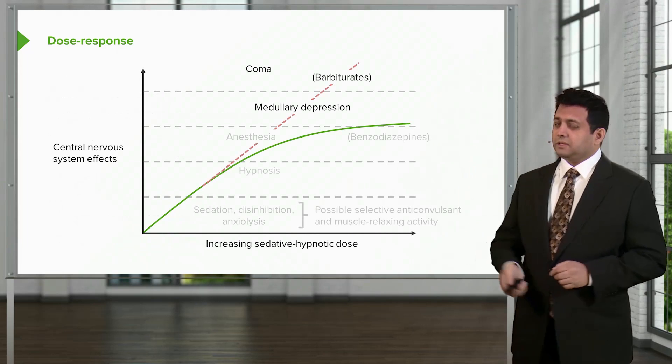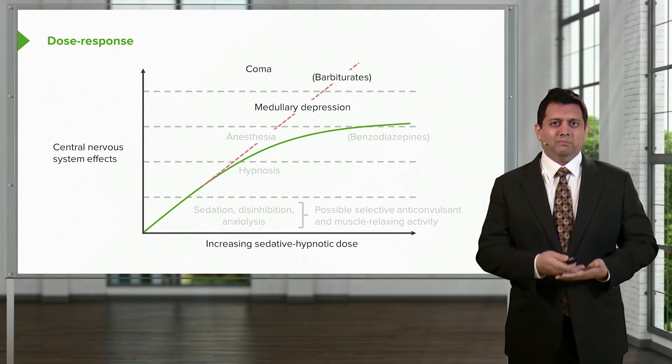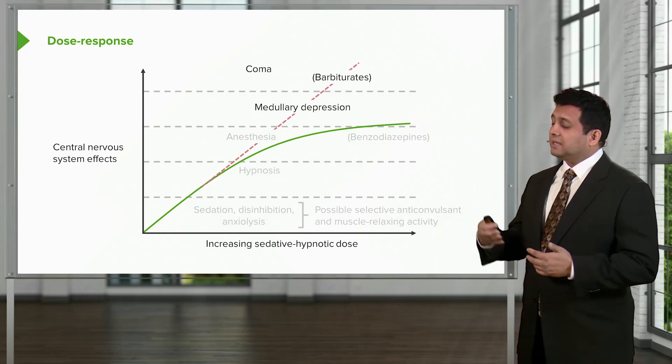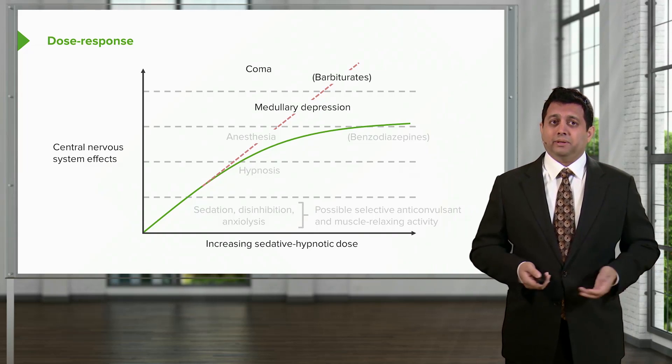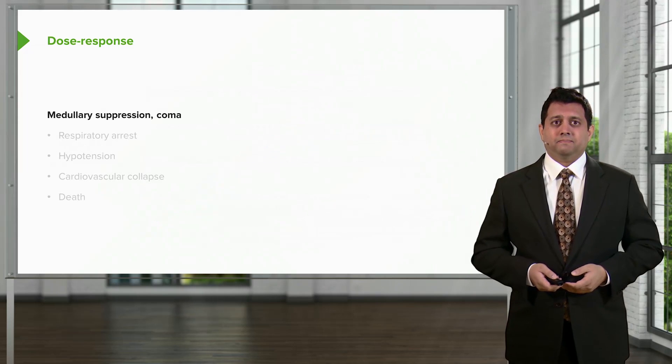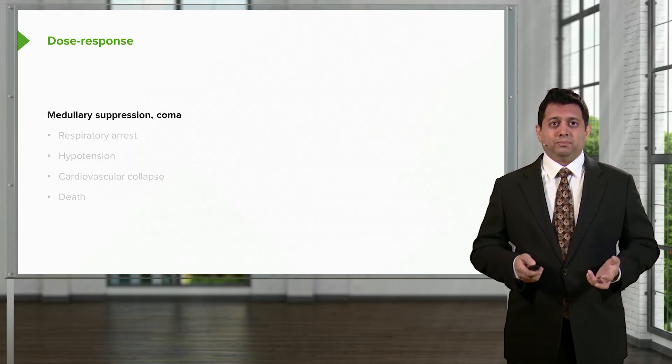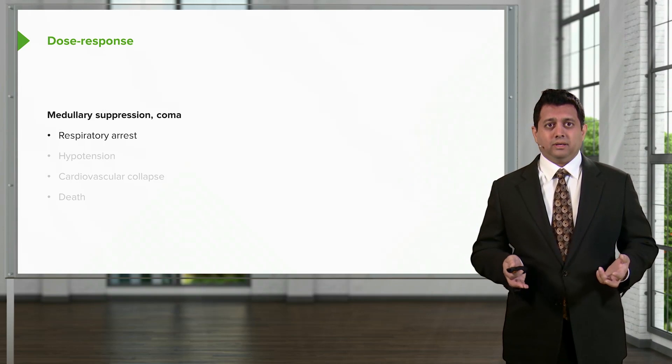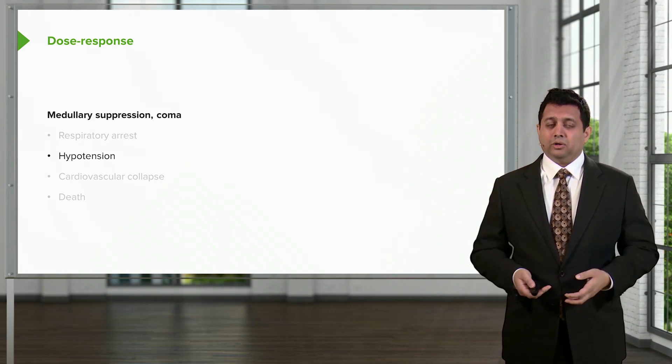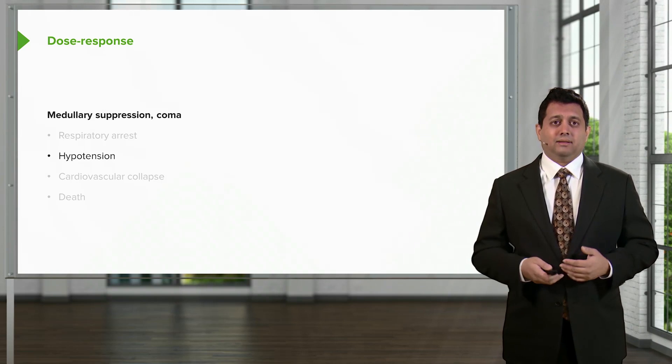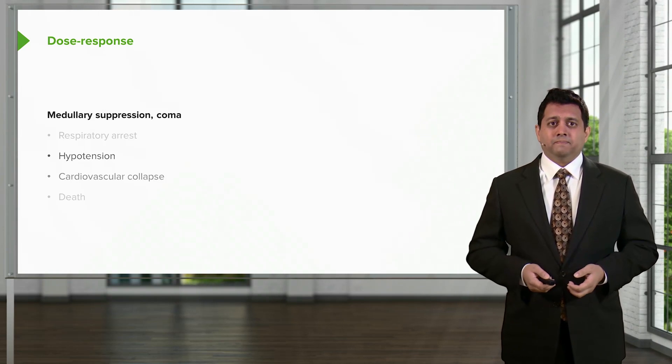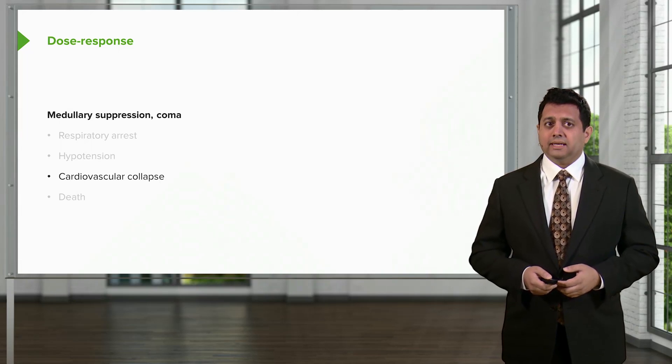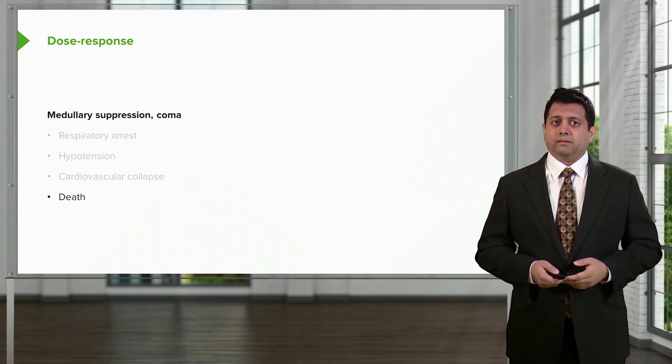Let's move on to the top of the spectrum. We're now talking about medullary depression and coma. And you can see that this is starting to become the sole province of the barbiturate class of medications. So medullary suppression and coma means that these patients often will have a respiratory arrest. They will develop low blood pressure because they've lost a lot of that sympathetic tone. There can be cardiovascular collapse if you're not administering the medications properly, and it can also result in death.